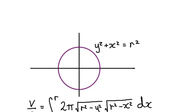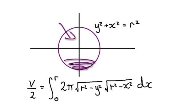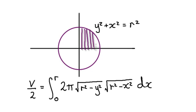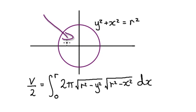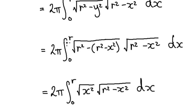Following on from the previous video, we were trying to work out the volume of a sphere. But rather than summing up all the disks, we would use a different method — we would sum up all the cylinders. So we're going to work out the volume of a sphere by summing up all the cylinders.